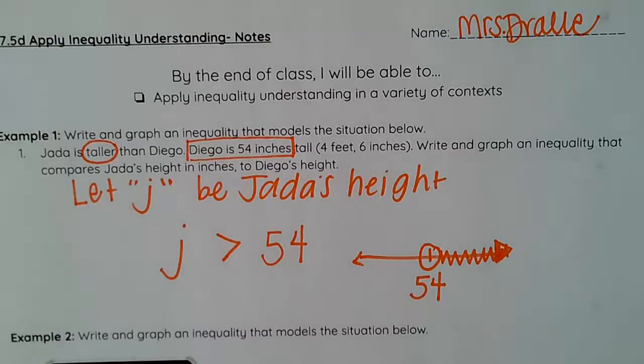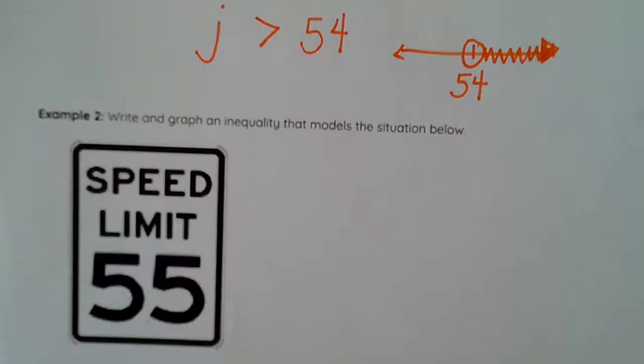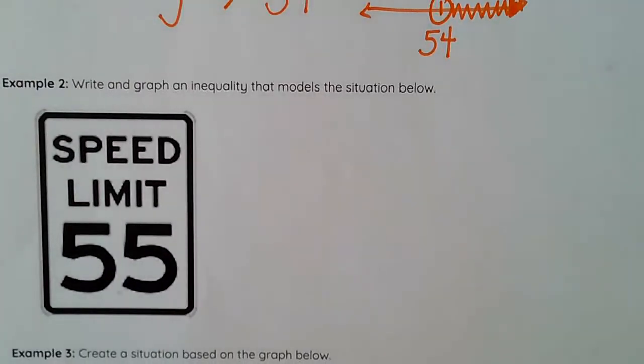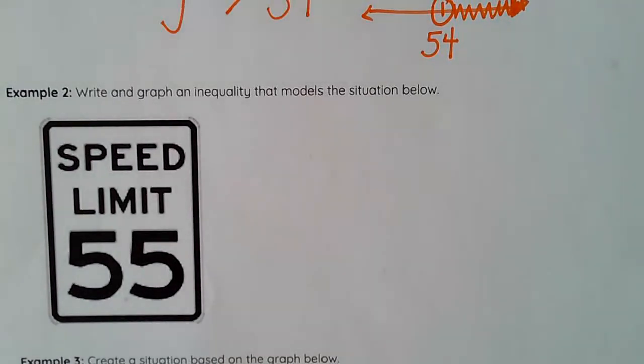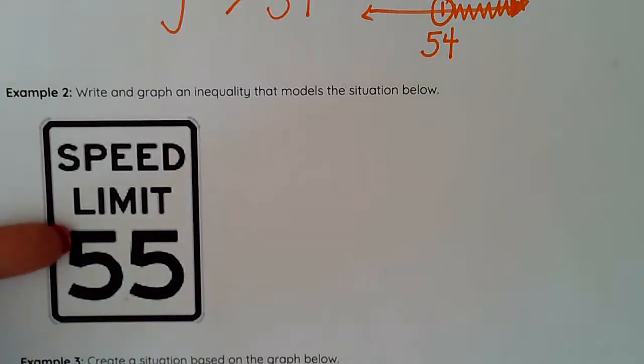Another example that we see all the time and we don't even know it are street signs or all sorts of signs. You look around and when you go out and about there are inequality signs everywhere and we don't even process that that's what they are. So when I see this speed limit sign speed limit is 55.